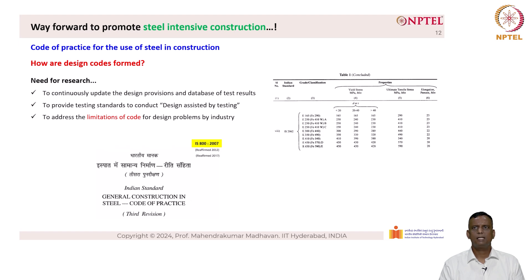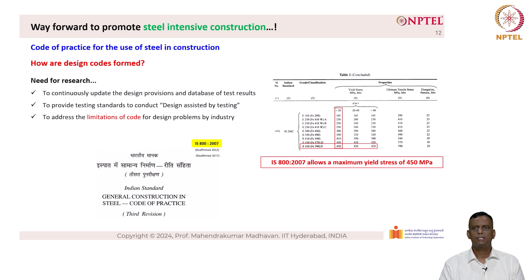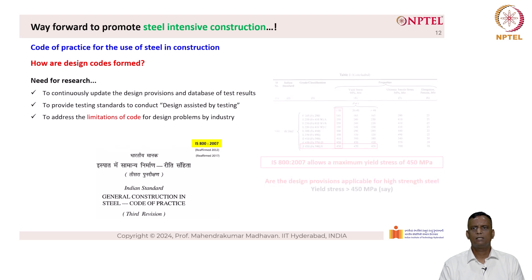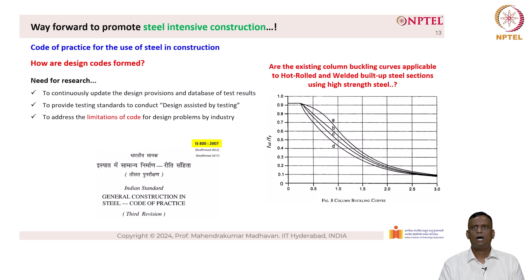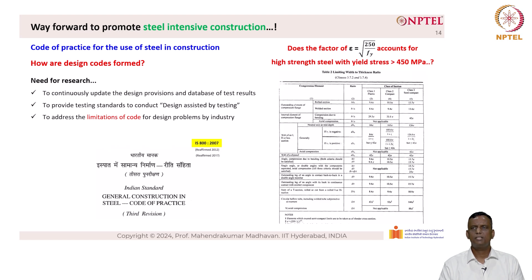The table from IS 800 shows the material properties of steel. IS 800-2007 allows a maximum yield stress of 450 MPa. The question is whether design provisions are applicable for high-strength steel where yield stress is greater than 450 MPa. Are the existing column buckling curves applicable to hot-rolled and welded built-up steel sections using high-strength steel? Does the factor epsilon equal to root of 250 by F_Y account for high-strength steel with yield stress greater than 450 MPa? The answer is a big no.